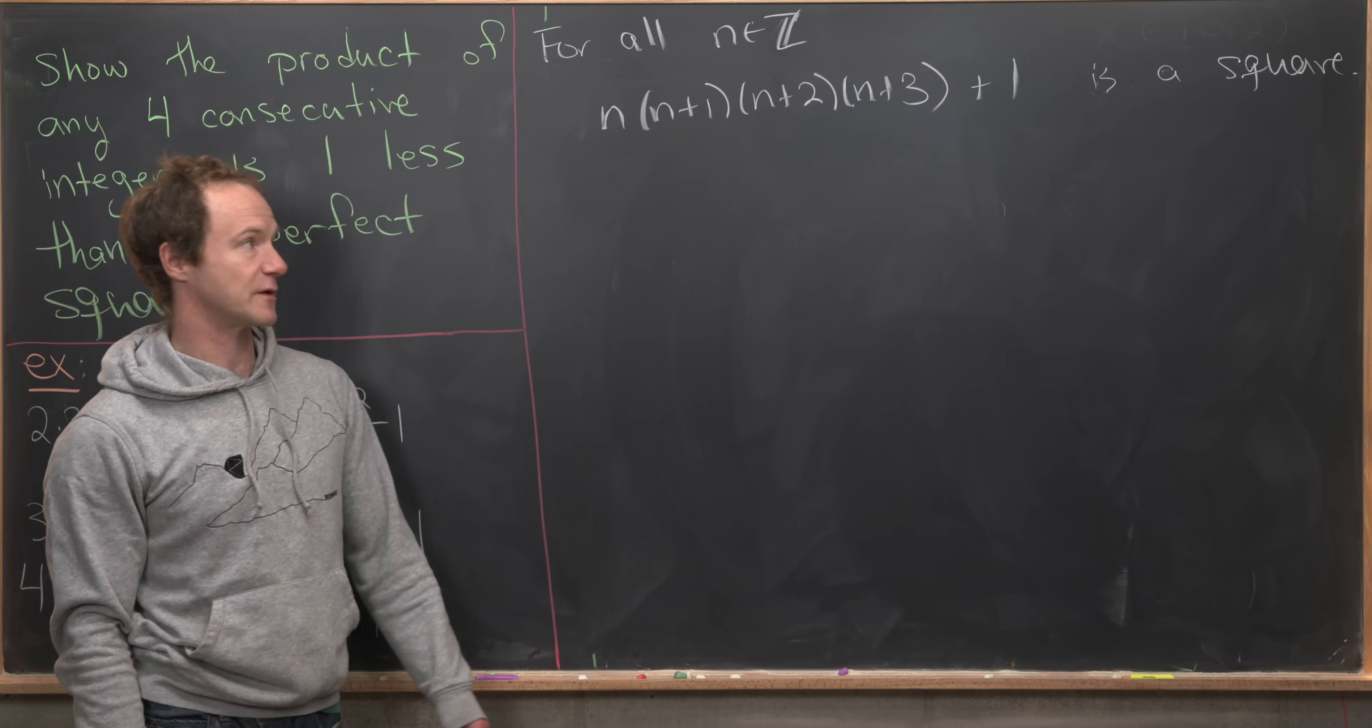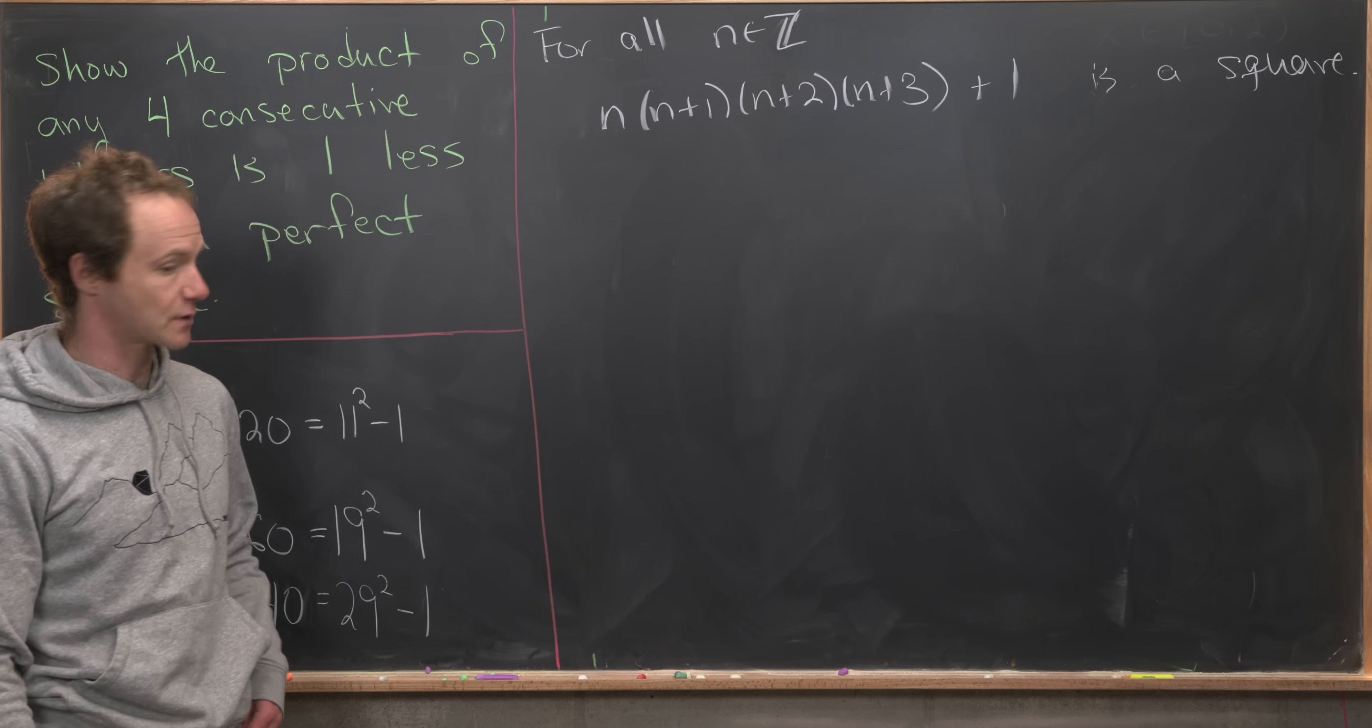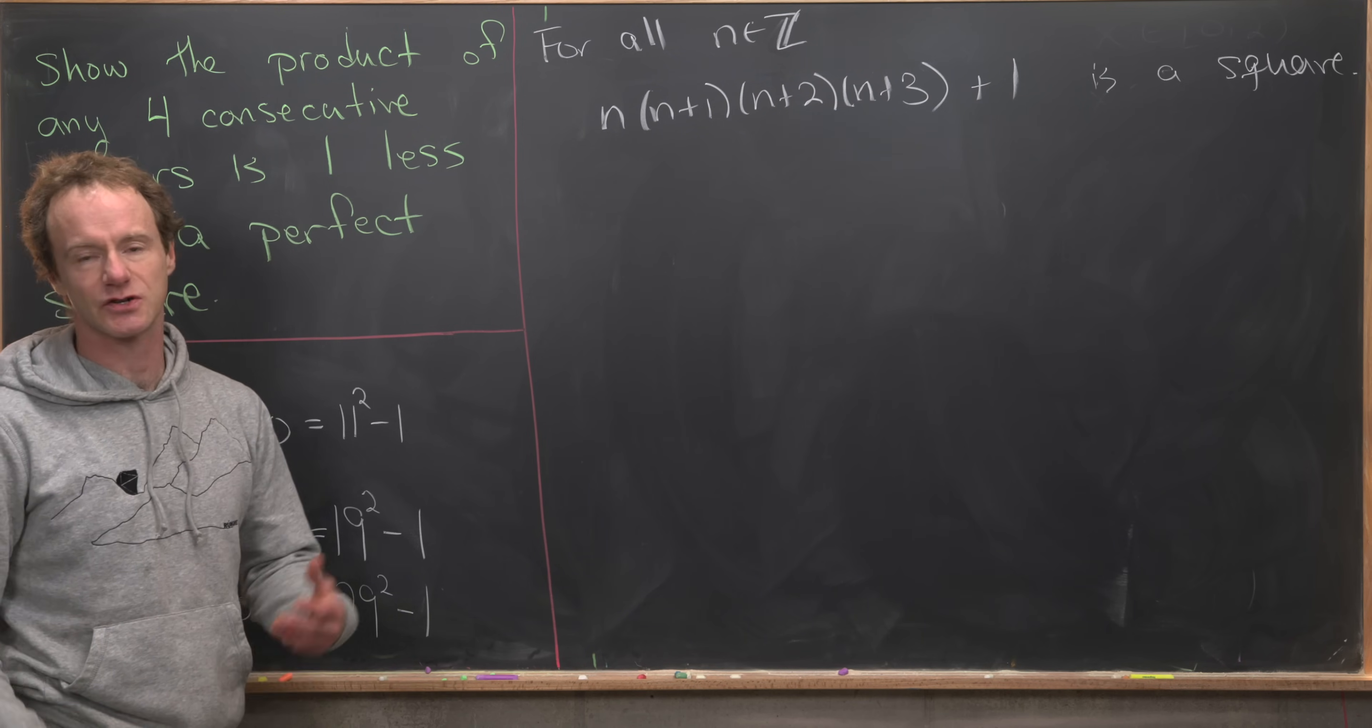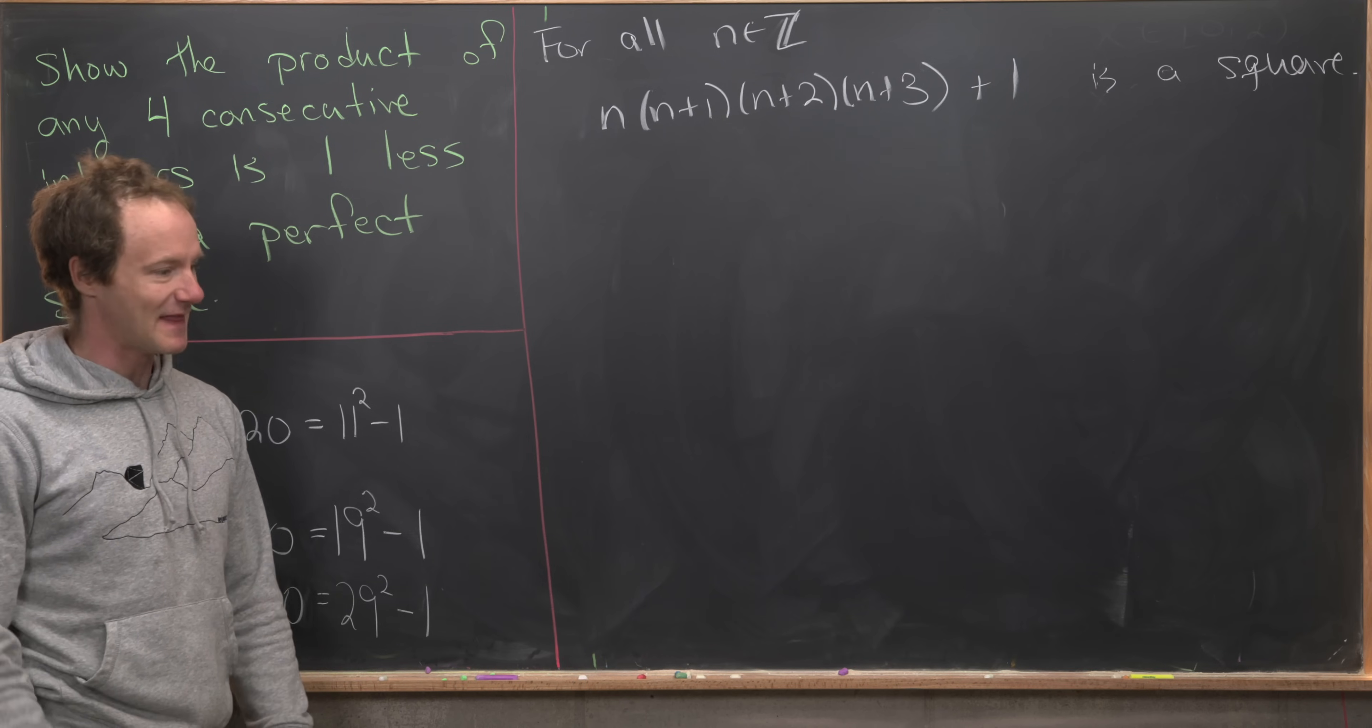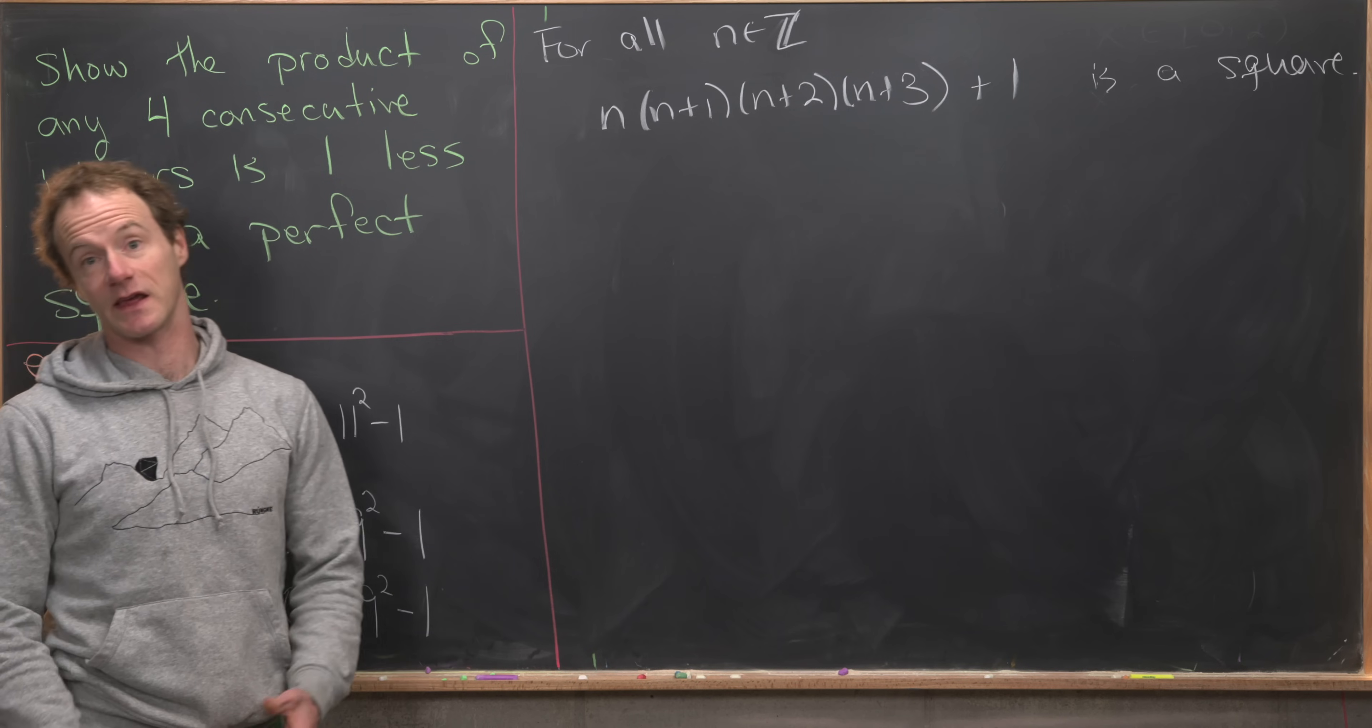Being one less than a perfect square means that when you add one to yourself, you are a perfect square. So we could just expand this thing out and then factor it as a perfect square, and that actually wouldn't be too terrible. But what I want to do is a little more elegant.